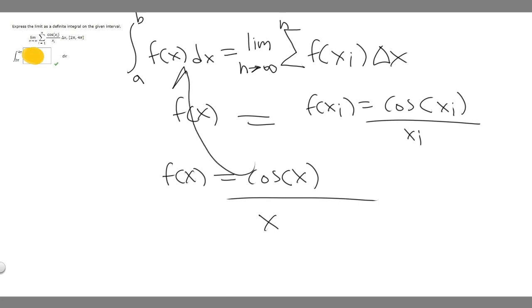We just plug it back in. You can see they already have the definite integral from 2π to 4π, so we're just going to plug this in there. It's the cosine of x over x. This is the answer to this problem.